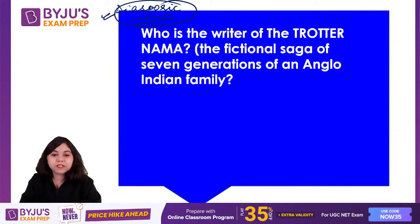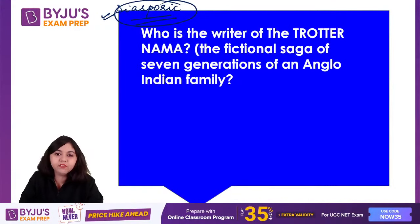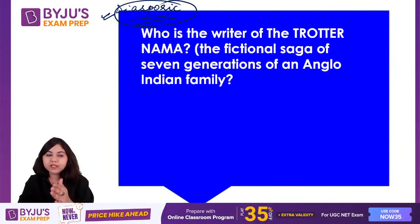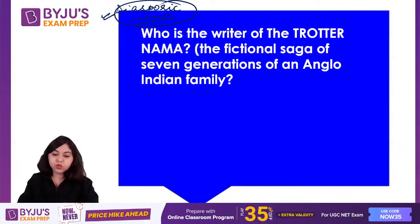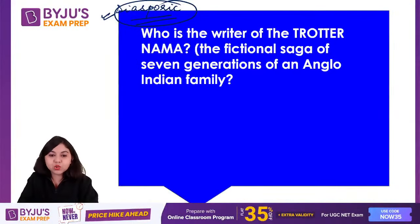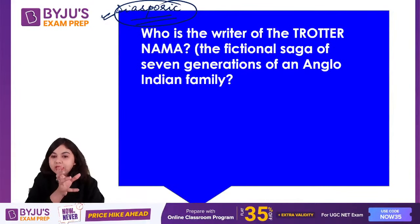Alan Seeley is the person who wrote Trotter Nama. Not just Trotter Nama — you've started getting questions on a lot of Alan Seeley's works. Diasporic literature has become suddenly very important. The question was about seven generations of the Trotters — it's a magnum opus trying to cover sweeping generations, similar in scope to War and Peace by Tolstoy.